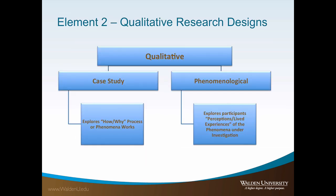The second element to be presented in the purpose statement is the research design. While there are several designs, the most common seen in DBA qualitative studies are the case study design and the phenomenological design. Those using the case study design must obtain data from at least two sources. Data collection is often part of the design and the student needs to succinctly note the data collection in the purpose statement. For example, you might state: 20 first-level managers will participate in semi-structured interviews to share their perceptions and experiences.